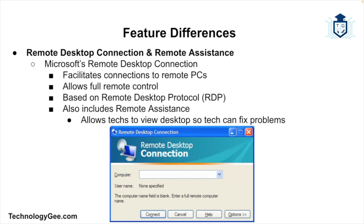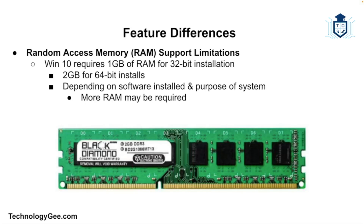To facilitate connections to remote computers and allow full remote control, Microsoft uses the Remote Desktop Connection program, which is based on the Remote Desktop Protocol (RDP). Remote Desktop also includes Remote Assistance, which allows users to invite a technician to view their desktop in the hopes that the technician can fix any problems they may encounter.